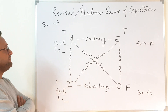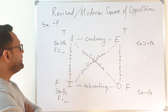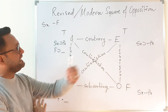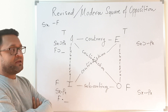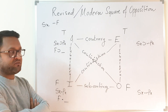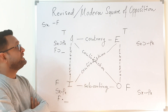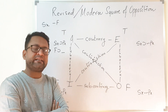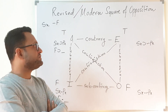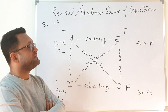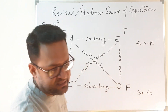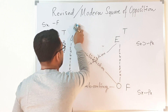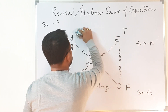Looking at the square of opposition with these values, we see that A and E can both be true together. But in the traditional square of opposition, A and E cannot be true together — the contrary relationship says they cannot both be true. Since they can both be true here, the relationship of contrary is gone.